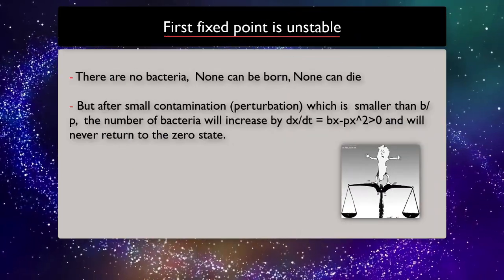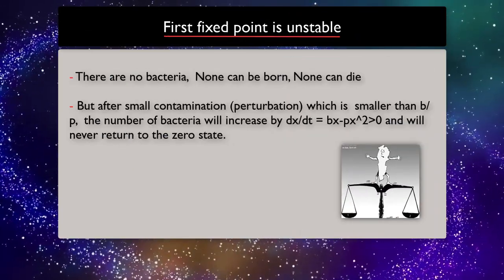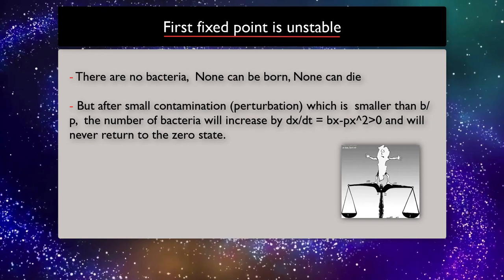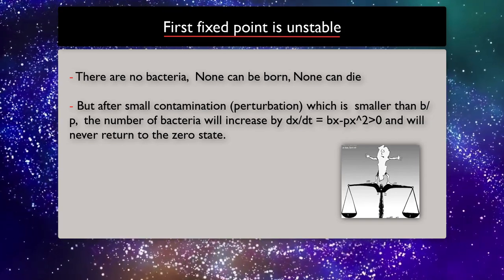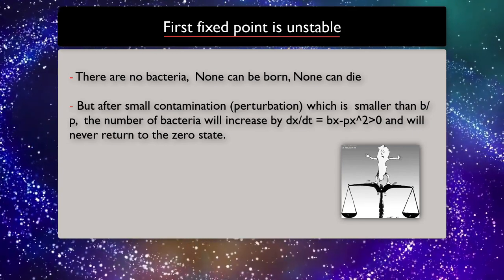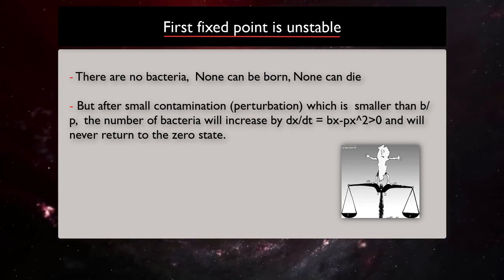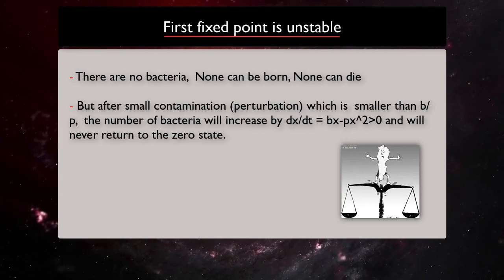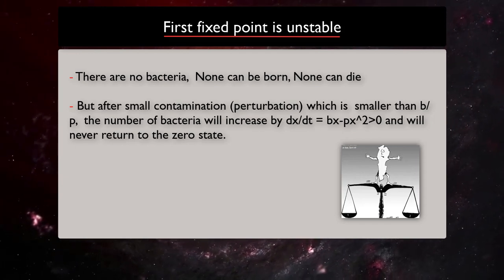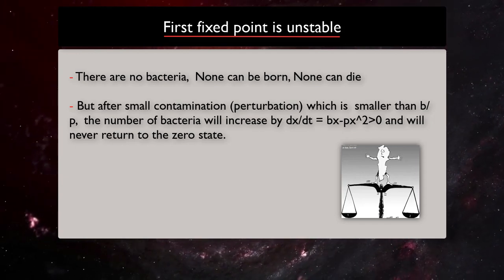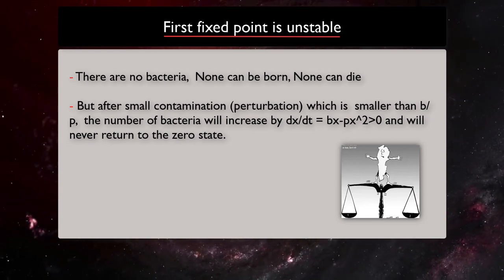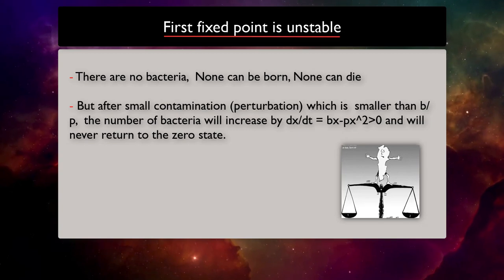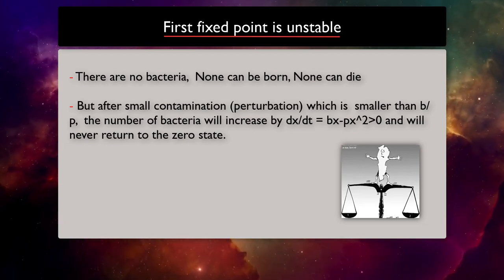First fixed point means there are no bacteria. None can be born, none can die. However, after a small contamination perturbation, which is smaller than b over p, we can see the number of bacteria will increase by bx minus px squared, which is greater than 0, and will never return to the 0 state. So first fixed point is unstable.